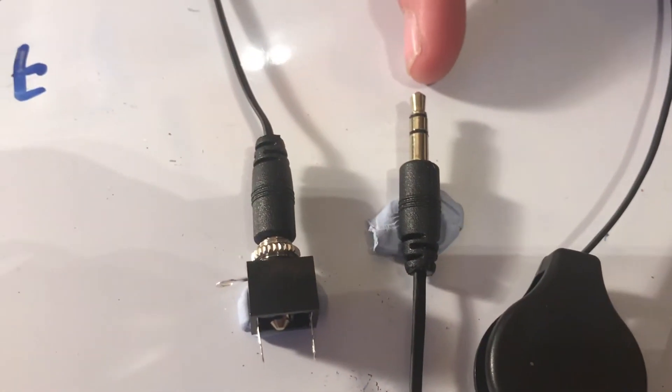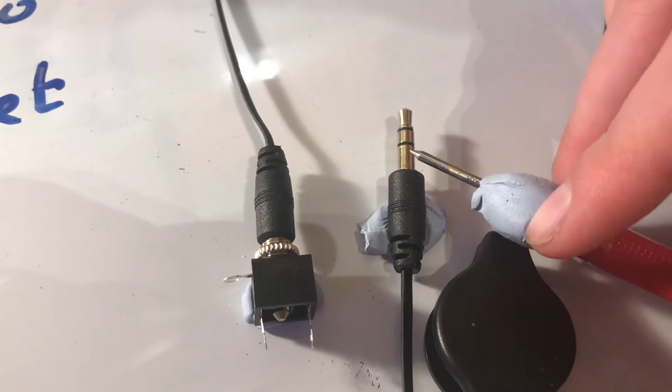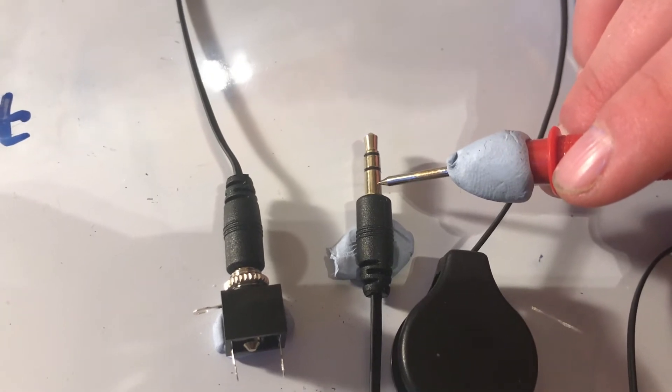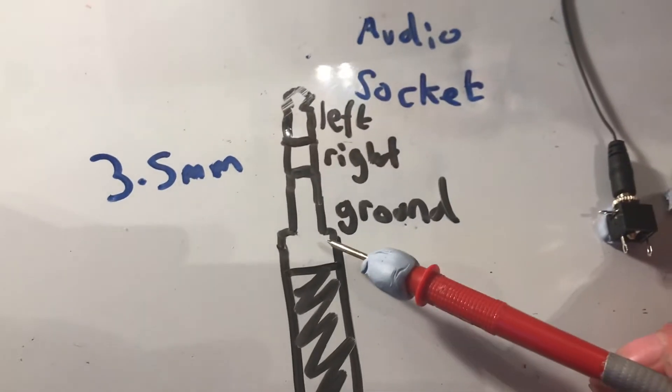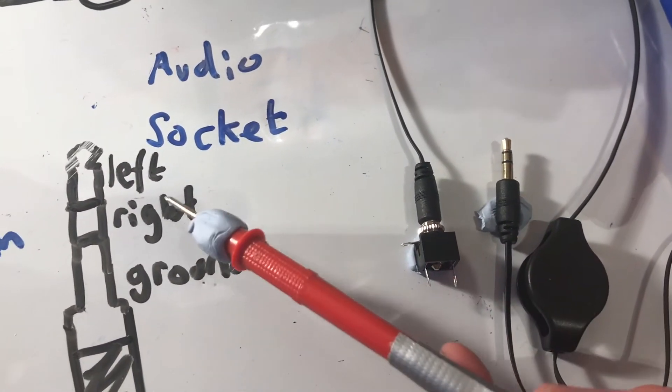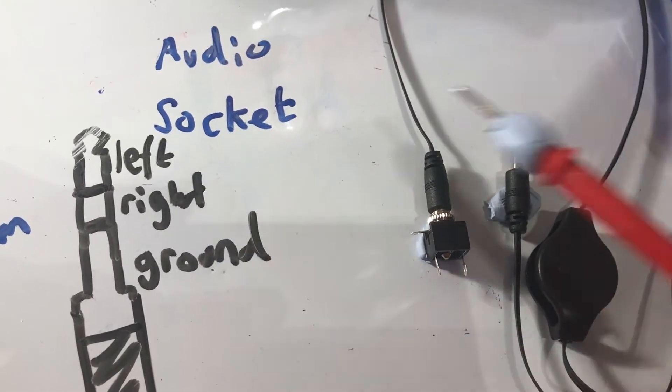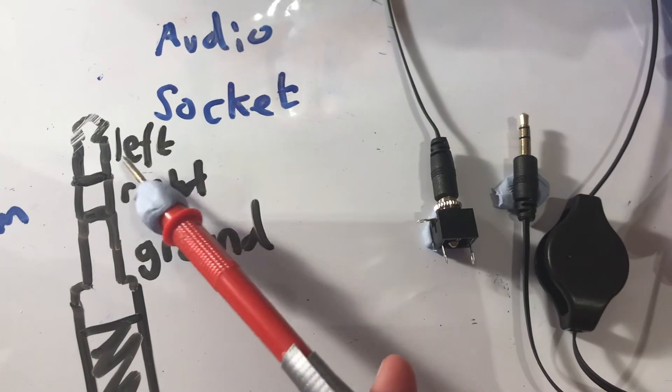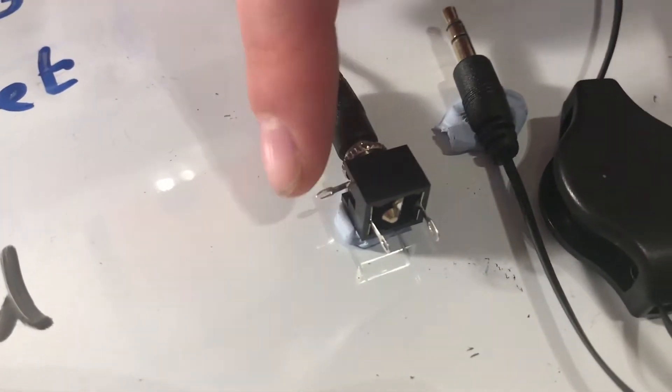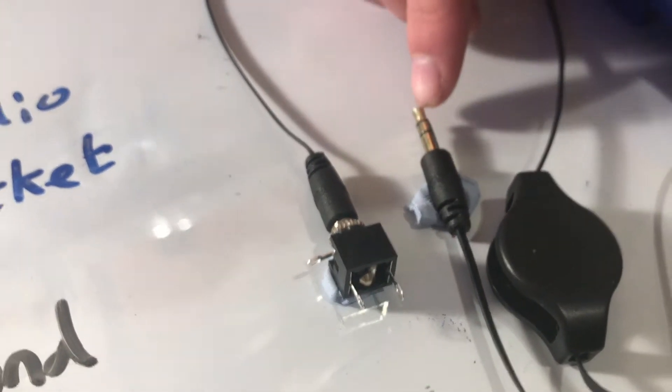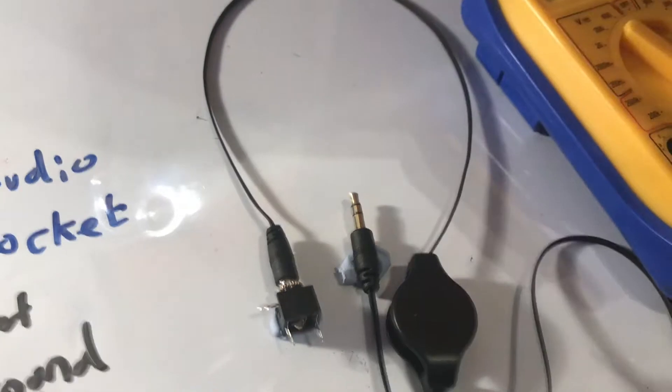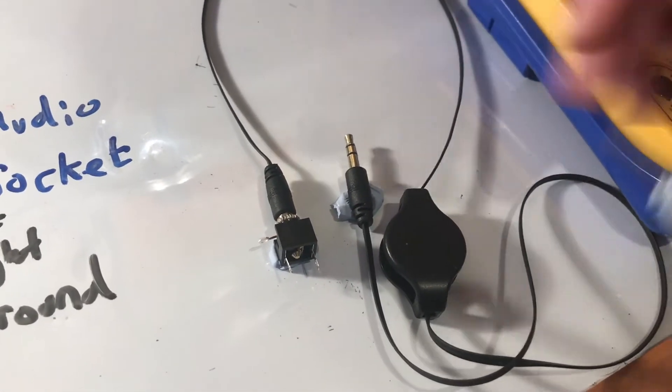On our little 3.5 millimeter jack, you can hopefully see we have three sections. This metal bit split into three. This is usually ground. We've just drawn a diagram over here. You can see that this bottom part is usually ground. Then the little section up, the middle, is connected to the right, and that is the right audio signal. And then the tip is the left, and that's just the left audio signal. We've connected it into our little socket here and we see that has three legs, one for each section of our jack. But I don't know which is which. I suspect this is ground, but I don't know which is left and which is right. It doesn't really matter if that gets mixed up, but I just want it to be perfect.